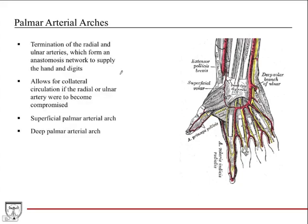So the palmar arterial arches are the termination of the radial and ulnar arteries — an anastomosis network. What this really allows for is if the radial or the ulnar artery were to become compromised, either through trauma, an embolus, some kind of blockage, or laceration, you could still ensure collateral circulation via this anastomosis, again via the superficial and deep palmar arches.